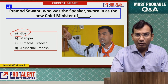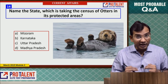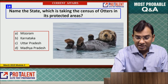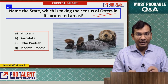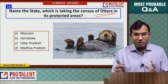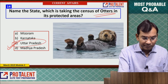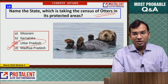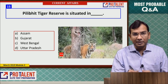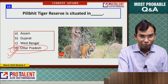Question 14: Name the state which started taking a census of otters in protected areas — counting the total otter population. This was started by Uttar Pradesh, so the answer is Uttar Pradesh.